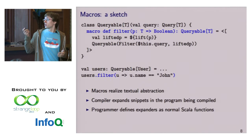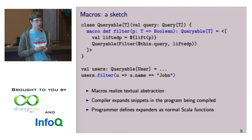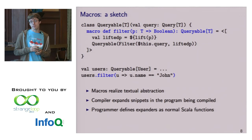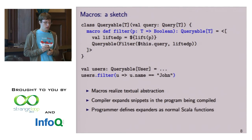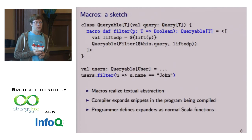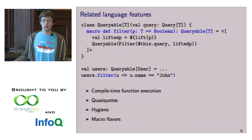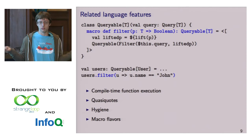I came to Martin Odersky — my professor and also creator of Scala — with something like this. I told Martin: there's such a thing as macros and they can implement LINQ. With macros you can essentially write methods that are executed at compile time, and these methods can generate code. This code can then be used as usual, as if the programmer had written it himself.